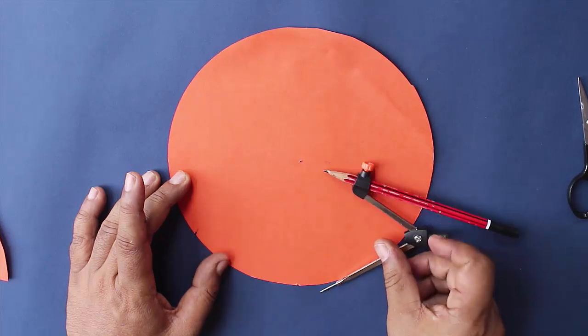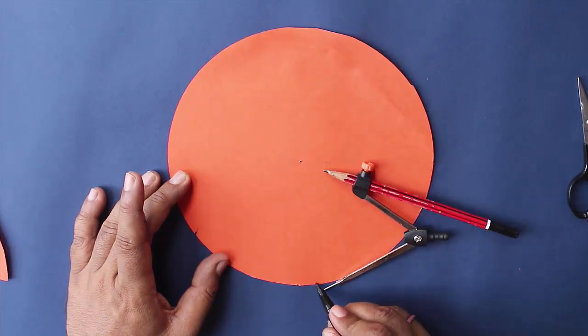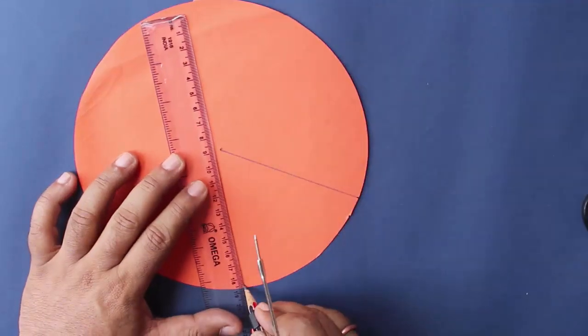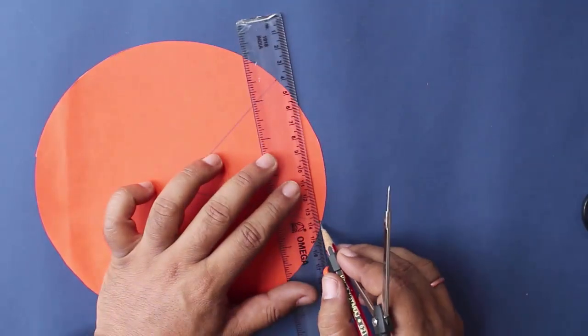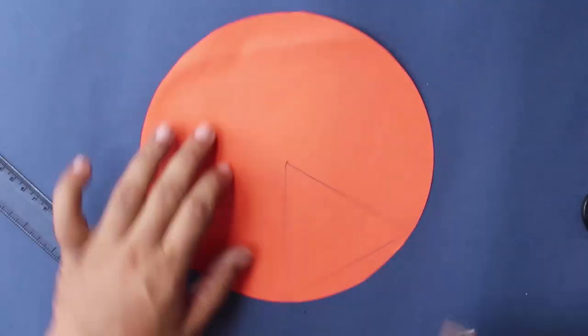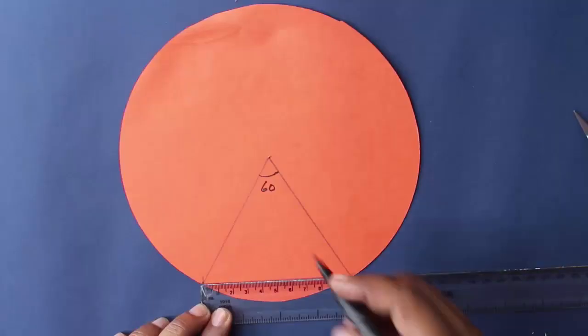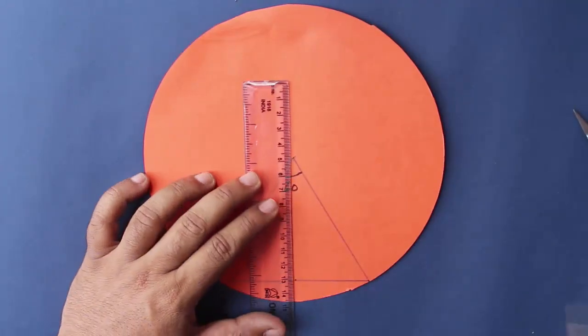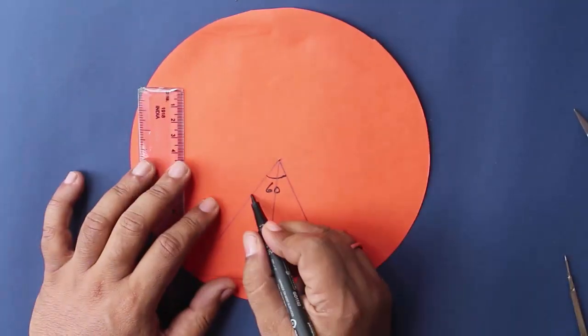We will first open the compass to the size of the radius and mark two points on the circumference. By joining these two points, we make an equilateral triangle. And now by bisecting the base, we will divide this angle in two parts and therefore get a 30 degree angle.